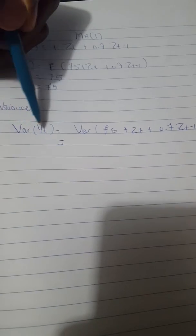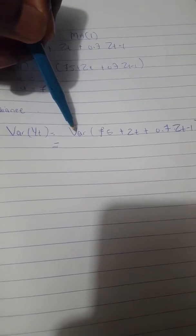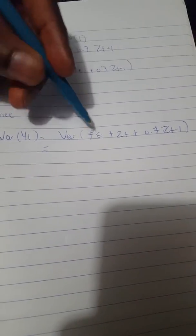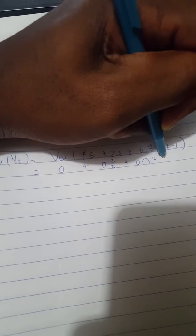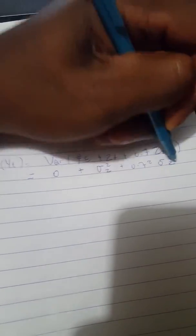So we'll have var of 75 which will be a coefficient constant. That will be 0 plus sigma squared Z plus 0.7 squared sigma squared Z.